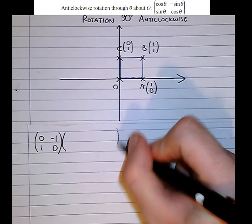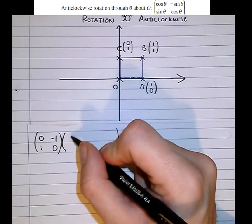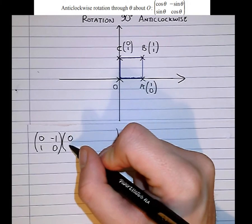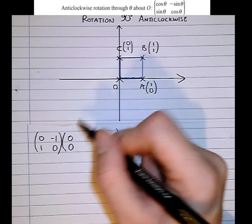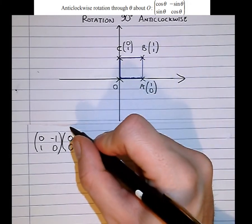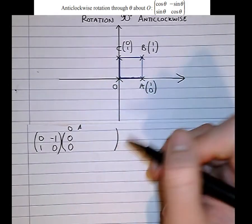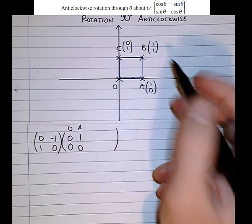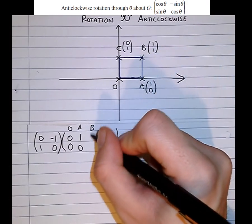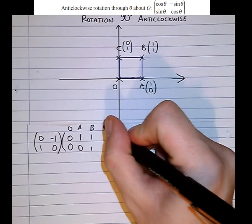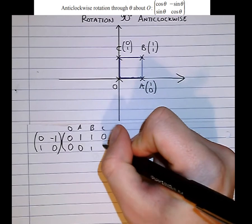So I'm going to apply it to all four vertices of this unit square. I'm going to apply it to vertex O, which is the origin, 0, 0. I'm going to apply it to A, which is 1, 0. I'm going to apply it to B, which is 1, 1. And I'm going to apply it to C, which is 0, 1.